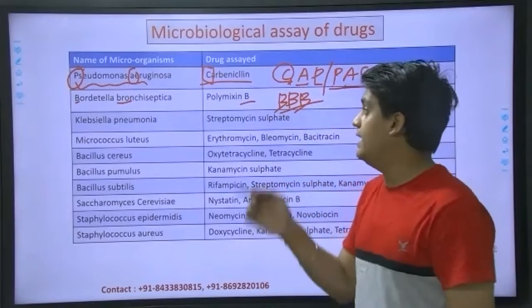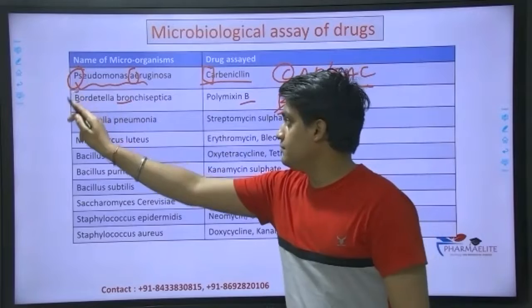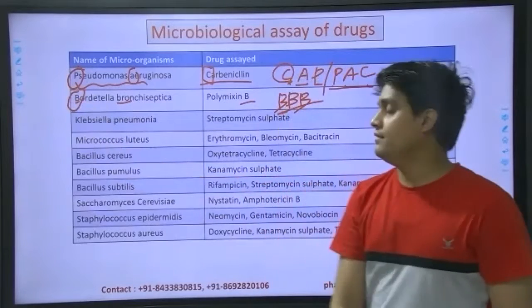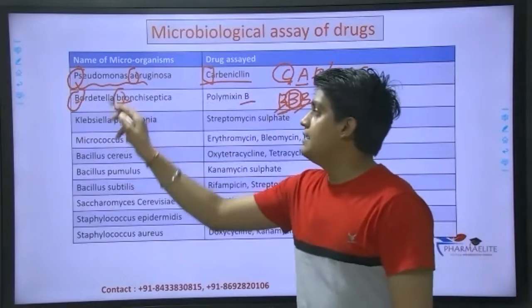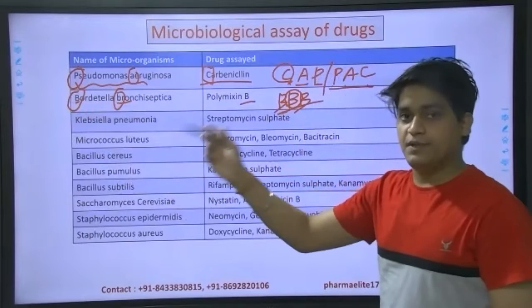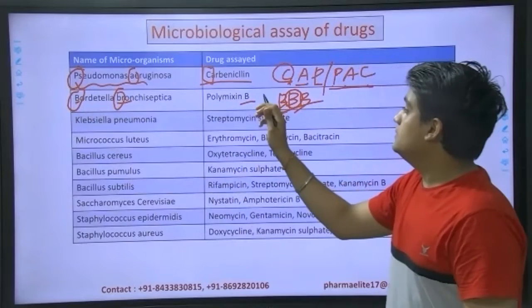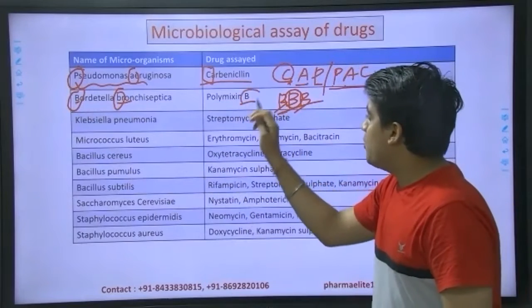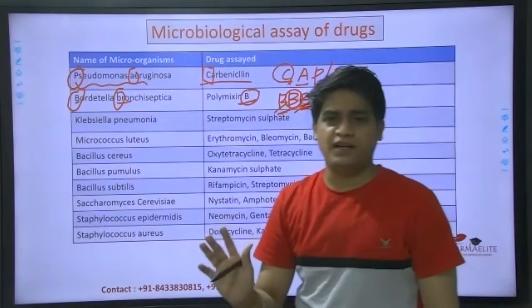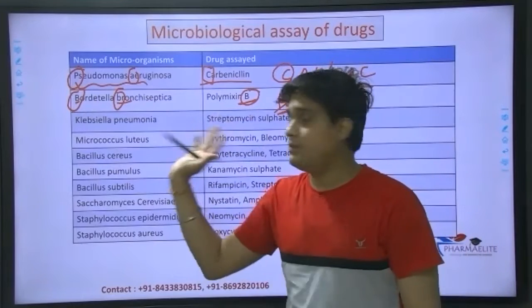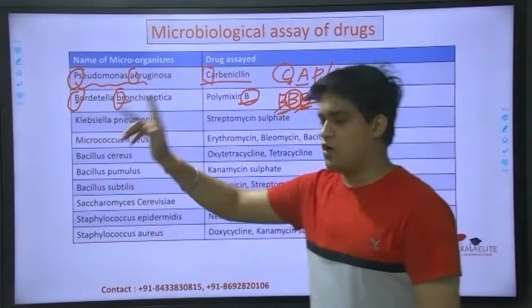The first B stands for Bordetella, the second B stands for bronchiseptica - so it's Bordetella bronchiseptica, and P stands for polymyxin B.